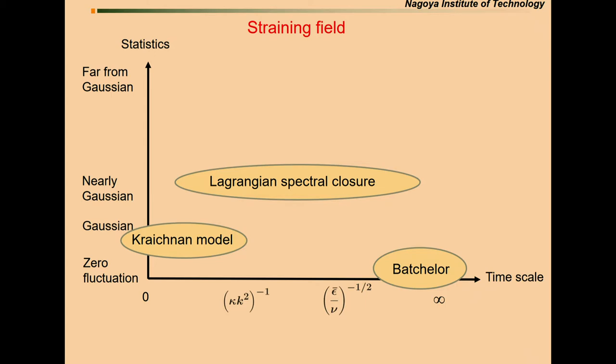This is the different statement about the three theories for the time scale and statistics of straining field. The Batchelor theory sits here for the infinite time scale. The Kraichnan model sits here. It's zero-time correlation, but nearly Gaussian. And the Lagrangian spectral closure is sitting around here. But our target is here because we are considering actual turbulence.